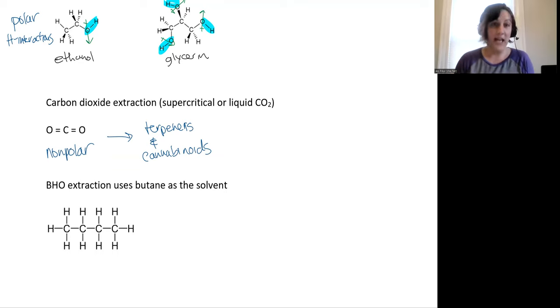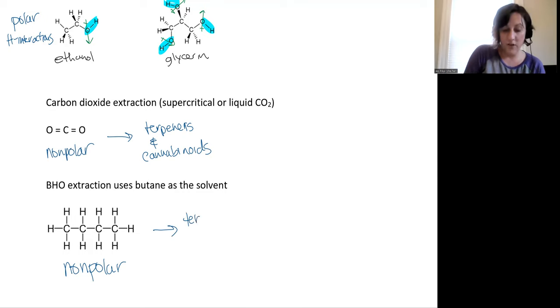And then the last one we have here is for BHO extractions, which are really using butane as a solvent. And this is a picture of butane. It is also non-polar, just like our carbon dioxide. And this one doesn't even have polar bonds that are just symmetrical. This one is just all non-polar bonds between carbon and carbon or carbon and hydrogen. And so butane will be able to dissolve all of the non-polar compounds in the plant material. And so again, that'll be our terpenes and our cannabinoids both.